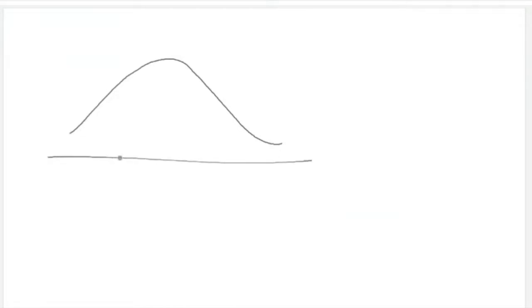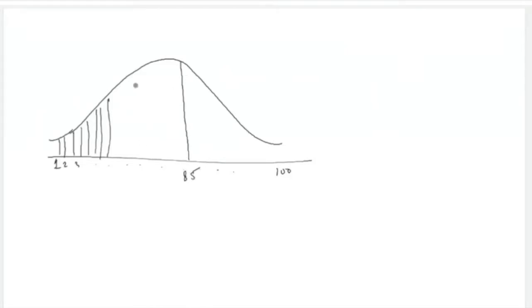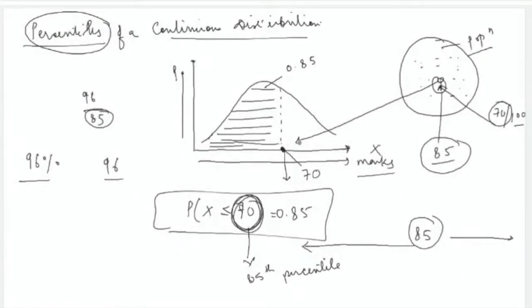Percentile means you have divided your entire distribution into 100 parts, and each part is one percentile. 85th percentile means 85 such parts have been covered. Importantly, the 85th percentile does not mean the variable's value is 85 — the actual value depends on the population distribution and could be 60, 70, or 90.